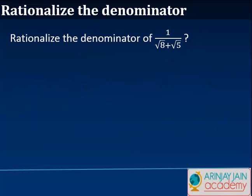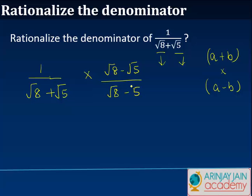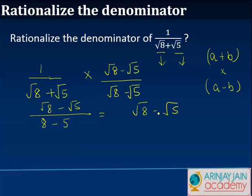Now let's look at a third example: rationalize the denominator of 1 over root 8 plus root 5. What I have here is a plus b. If I multiply a plus b by a minus b, I can get the squares and rationalize it. So I write this as 1 divided by (root 8 plus root 5), multiplied by (root 8 minus root 5) divided by (root 8 minus root 5). (a plus b)(a minus b) gives me a squared minus b squared, which is 8 minus 5 equals 3. And on the numerator, I get root 8 minus root 5. So the answer is (root 8 minus root 5) divided by 3.